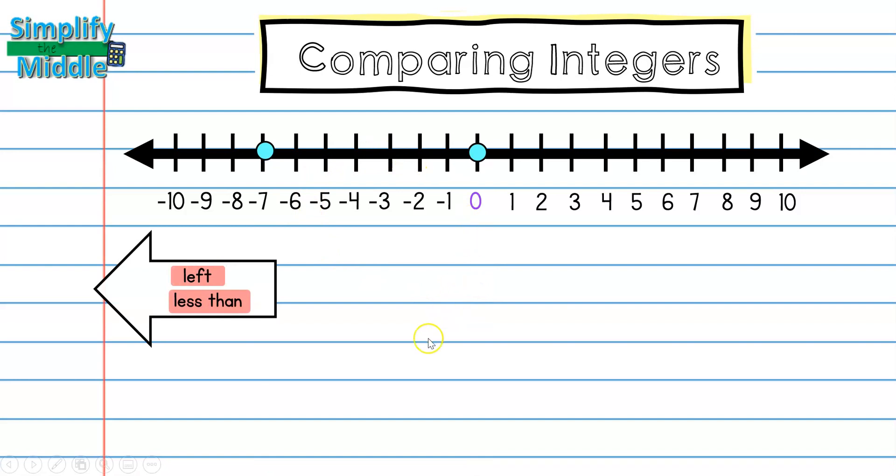We know that when, in general, we have two different points. When we're looking to the left, if the number is on the left side of another number, then it is less than. If a number is on the right side of another number, then it is greater than.